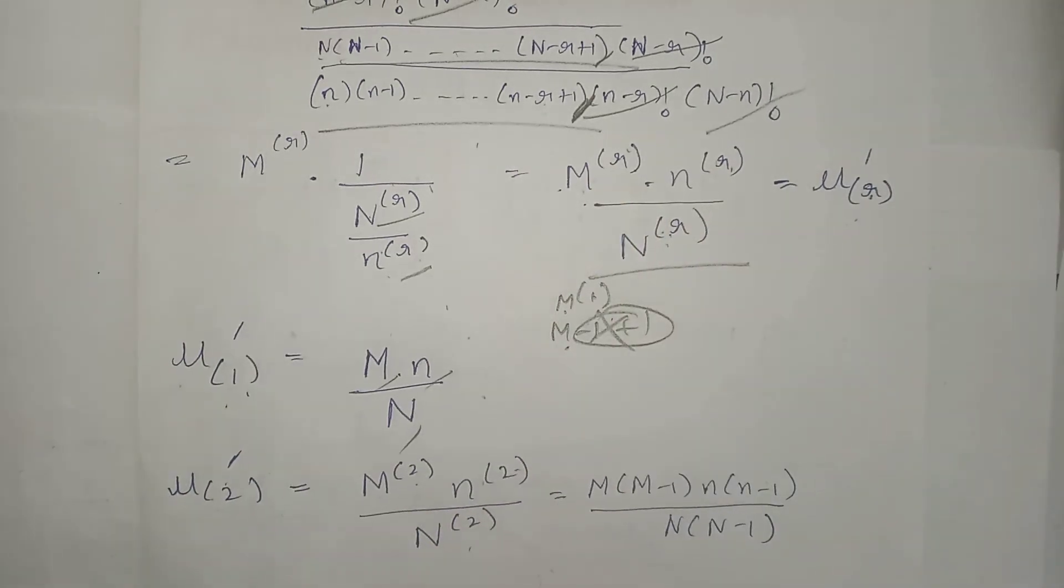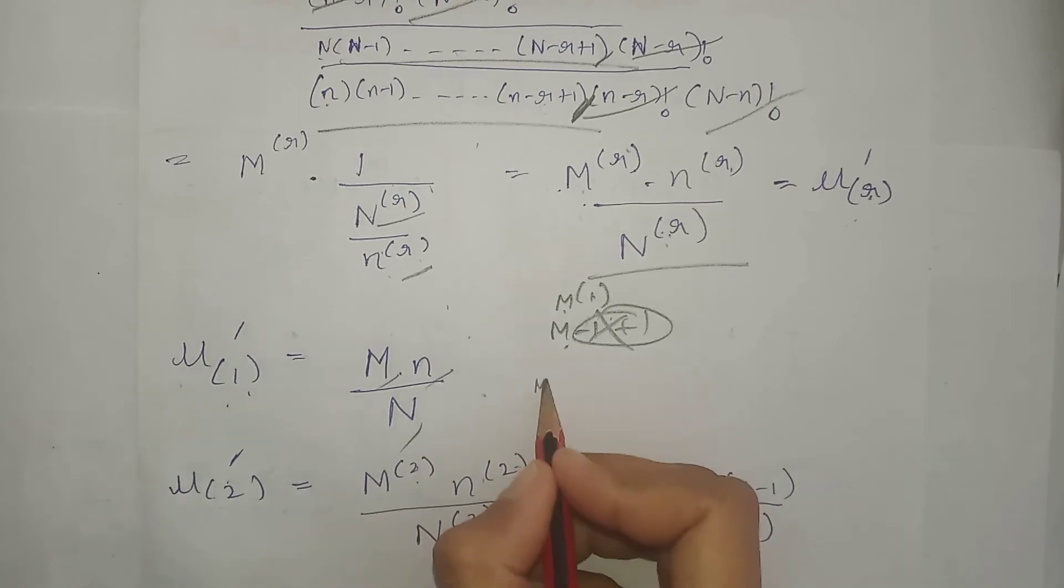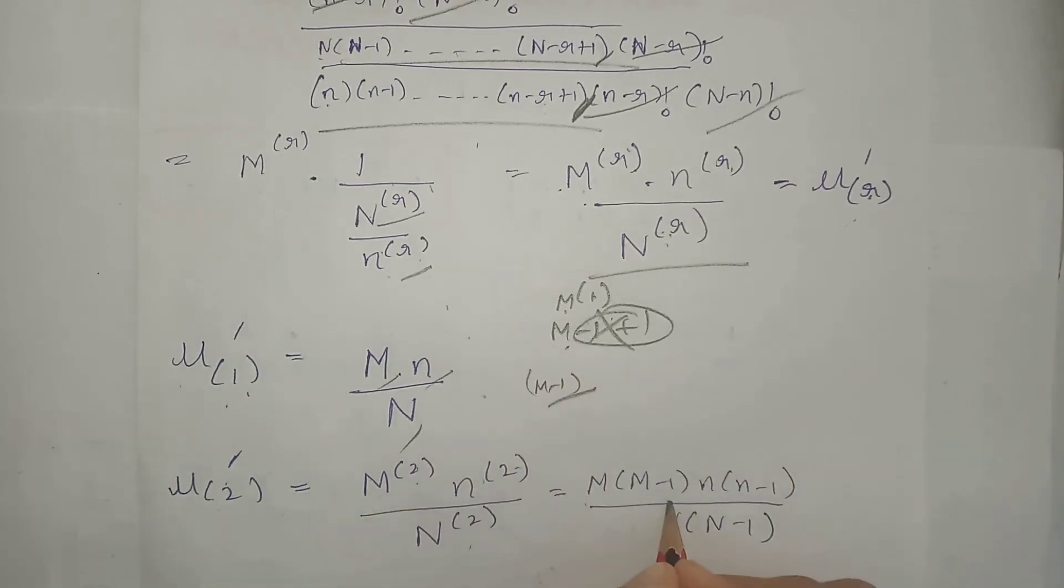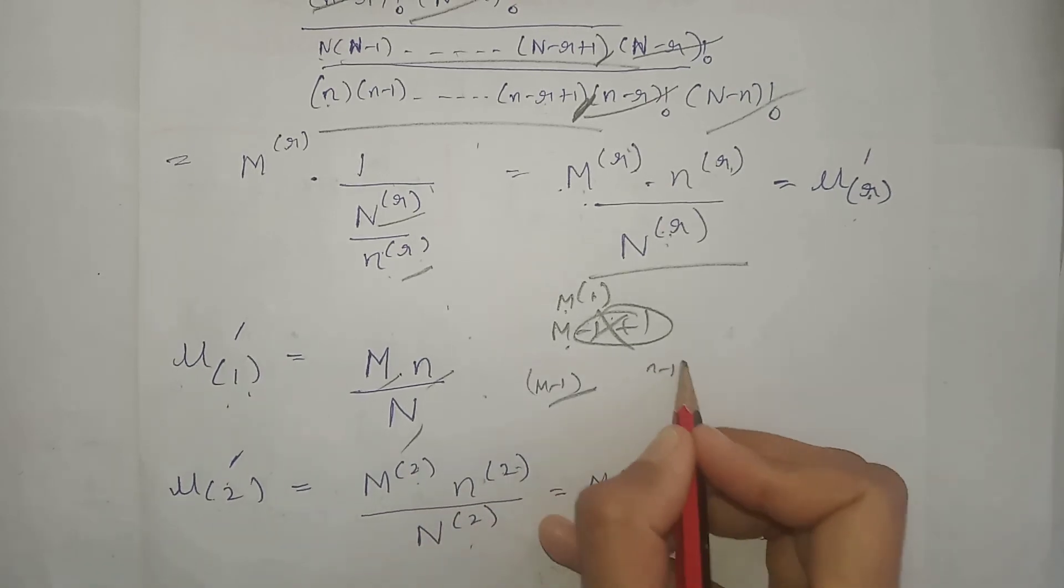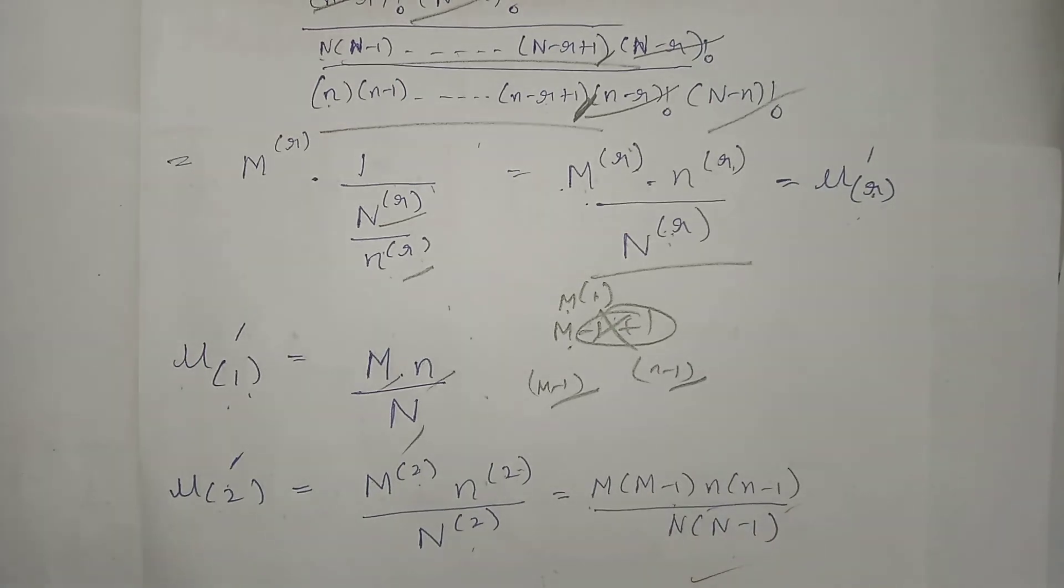Next is the second moment, second factorial moment about origin of hypergeometric distribution. Putting two in place of r here and here, we get this. How will we expand this? M minus two plus one that is M minus one will be your last term in the M factorial terms. Here N minus two plus one that is small n minus one. So this is the second factorial moment about origin.